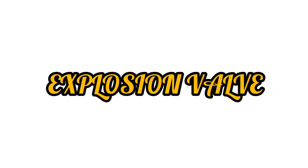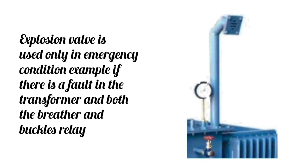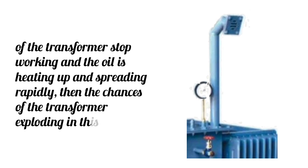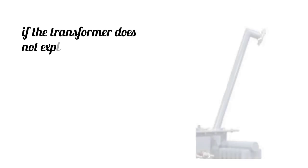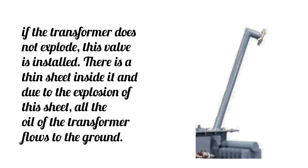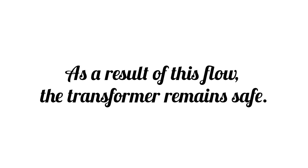Explosion valve. Explosion valve is used only in emergency condition. For example, if there is a fault in the transformer and both the breather and Buchholz relay of the transformer stop working and the oil is heating up and spreading rapidly, then the chances of the transformer exploding increase in this condition. If the transformer does not explode, this valve is installed. There is a thin sheet inside it and due to the explosion of this sheet, all the oil of the transformer flows to the ground. As a result of this flow, the transformer remains safe.